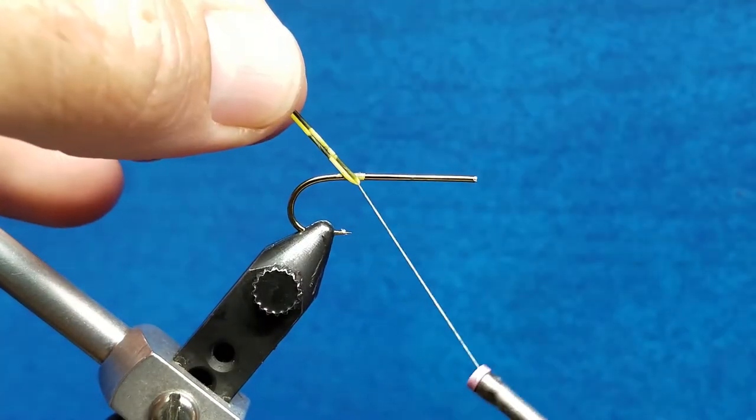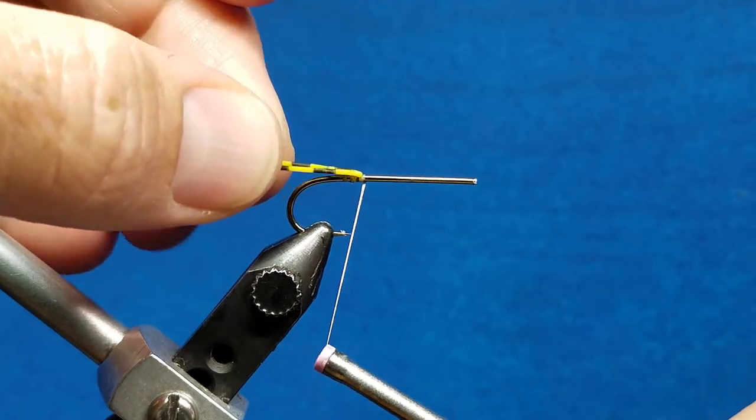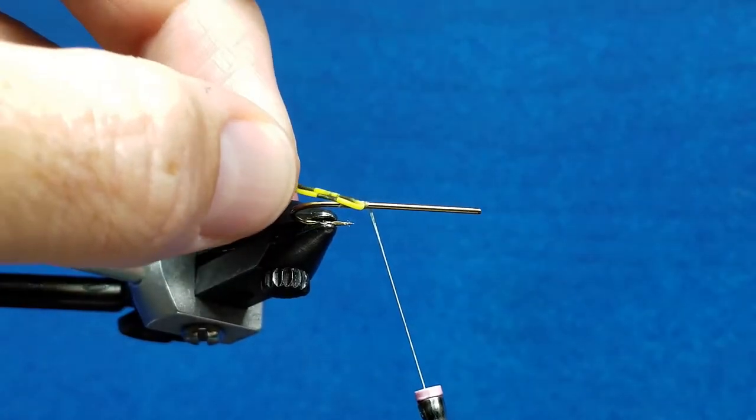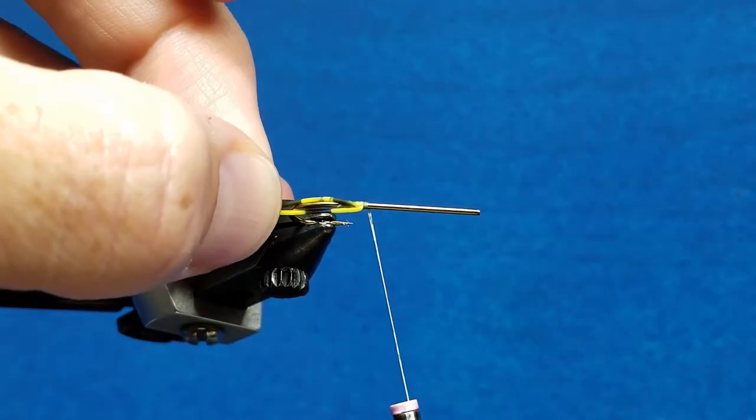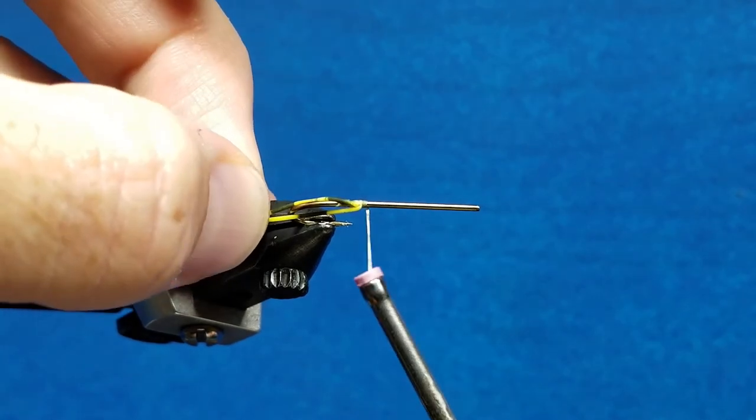Once I take one good firm wrap around the hook shank, that material is locked in place. And then what I prefer to do is very simply apply a little bit of pressure, and you can see the hook shank kind of peek through those two strands of legs as it straddles.